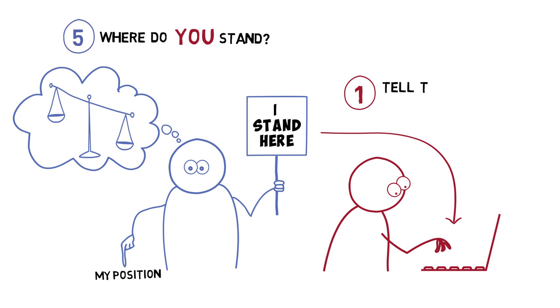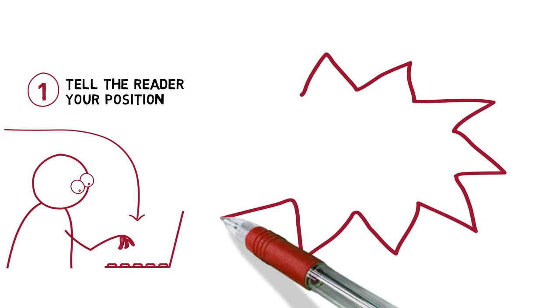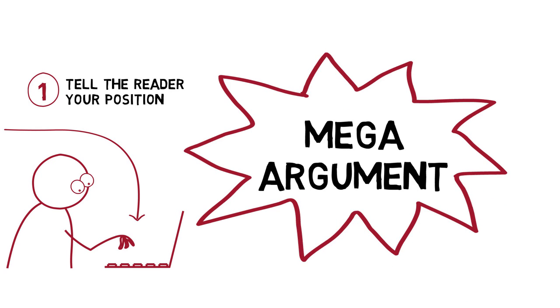The first rule of critical writing is therefore to tell the reader your position. Make sure you are clear about where you stand on the topic at hand. This position informs your mega-argument. In the US, this is called your thesis statement. It is the overall argument that you will develop throughout the piece of writing.